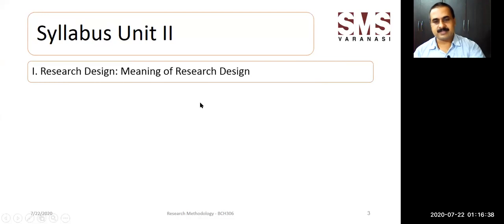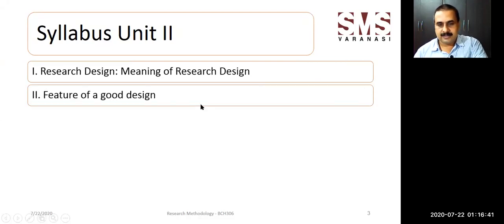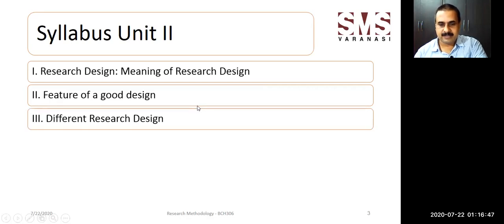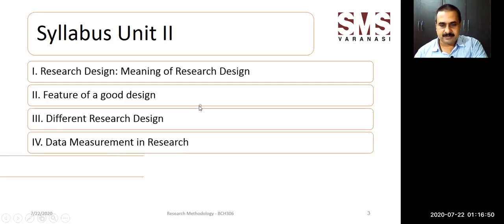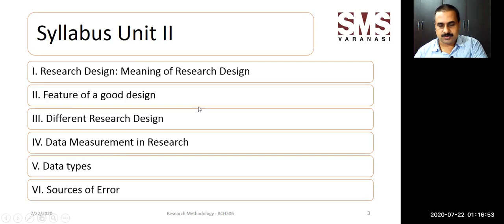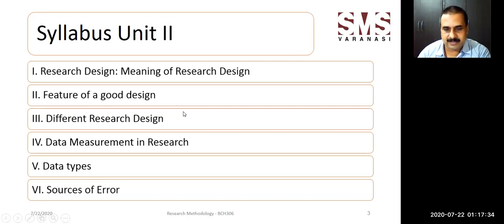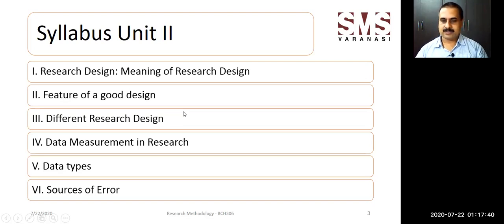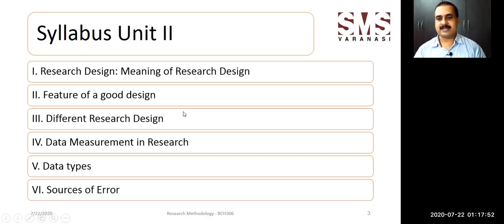In the second unit we are going to cover research design — the meaning of research design, features of a good research design, different research designs, data measurement in research, data types, and sources of error. The most important part is different research designs, which may be asked as a long answer type question. Features of good research design, data measurement in research, types of data, and sources of error may be asked as short answer type questions. The meaning of research design can also be asked as a definition.